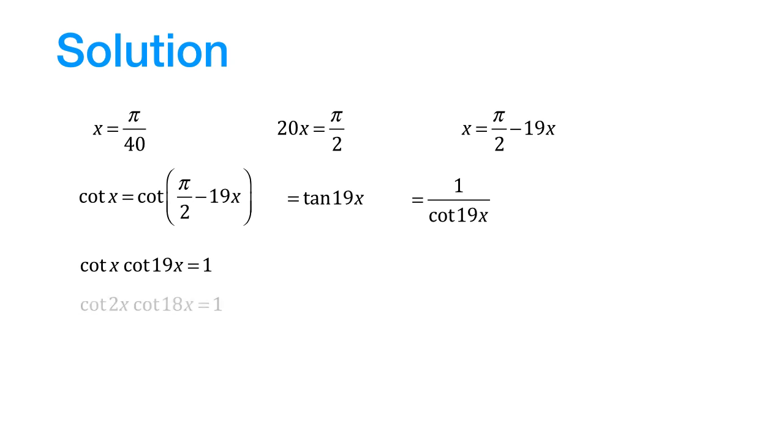In the same way, we can show that cot 2x times cot 18x would be equal to 1. So in the same way, we can multiply on and show that cot of 9x times cot of 11x is also equal to 1.